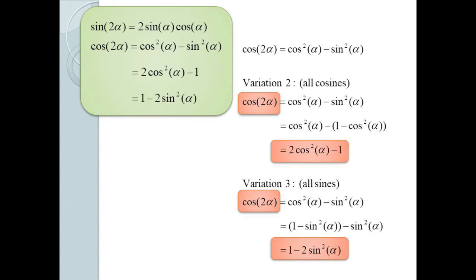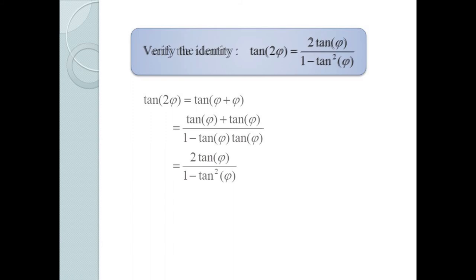There are two variations on the cosine double angle formula. We can substitute 1 − cos²α for sin²α to get 2cos²α − 1, or substitute 1 − sin²α for cos²α to get 1 − 2sin²α. All three versions are useful. For the tangent double angle formula, tan(2φ) = tan(φ + φ) = (tan φ + tan φ) / (1 − tan φ · tan φ) = 2 tan φ / (1 − tan²φ).